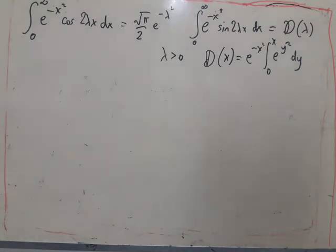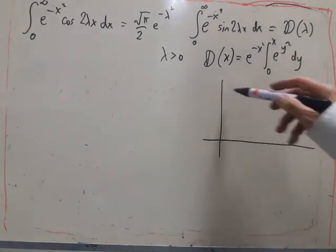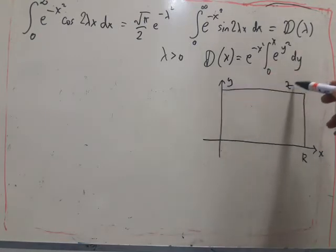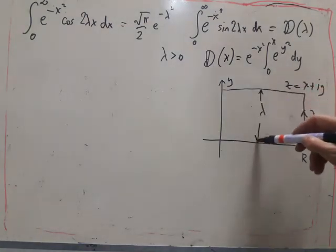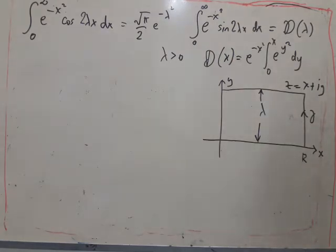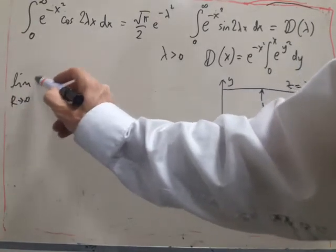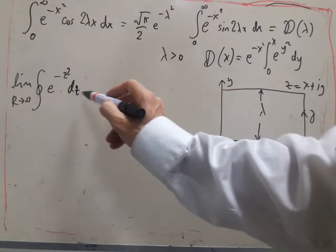This is rather difficult to guess otherwise. So it's suggested that we use the following contour, a rectangular contour, this time going from the origin. And the height of the contour is lambda. And it's suggested that we take the limit as r goes to infinity and integrate simply e to the minus z squared around this contour.